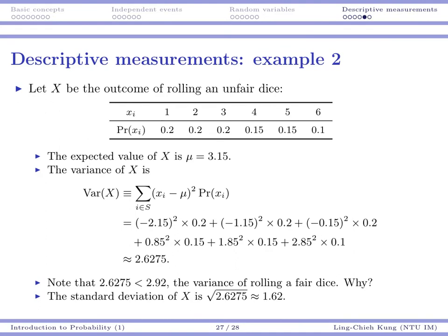How about the variance? The expected value we know is 3.15. So, we may follow this formula again to calculate the variance. For the first value 1, the difference between 1 and the mean is now 2.15. And then we square it. And then this value is multiplied by 0.2, the weight. And then we do the same thing for all the six values. We get some numbers around 2.6. So, the variance is also becoming smaller. When we have a fair dice, it's 2.9. When we have this unfair dice, we have 2.6.